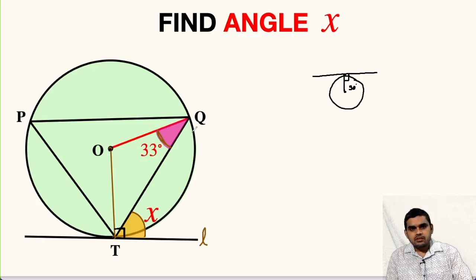Now, let us focus on this triangle O, Q, T. Let me draw it outside. So this point is O, Q, T. This angle is given as 33 degrees.